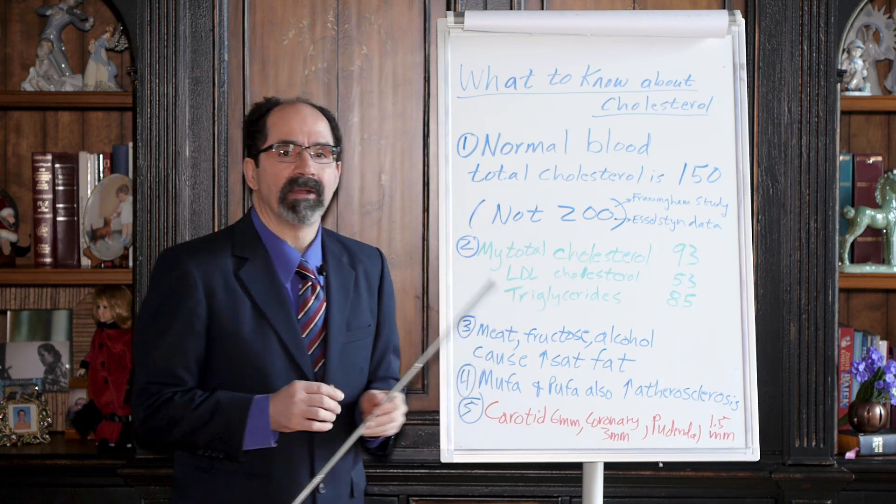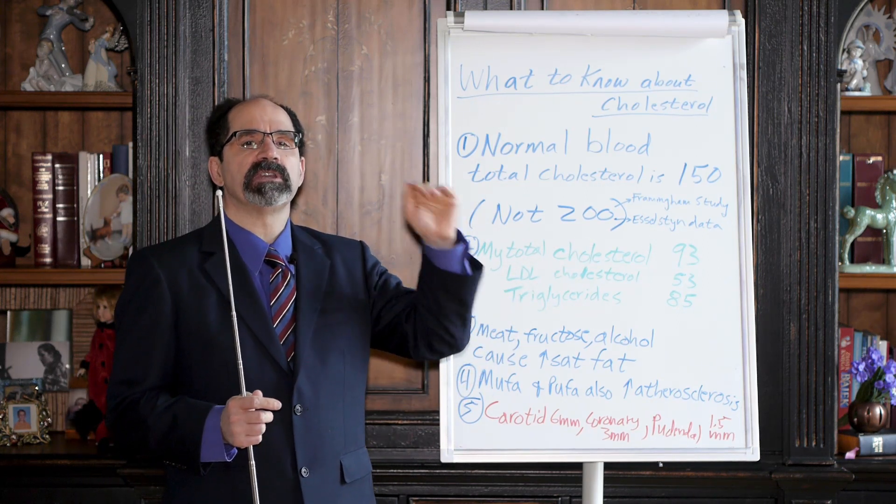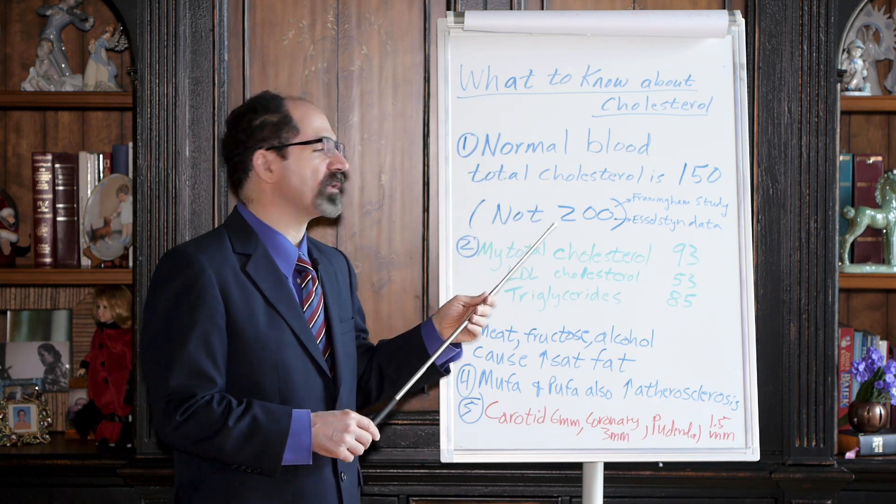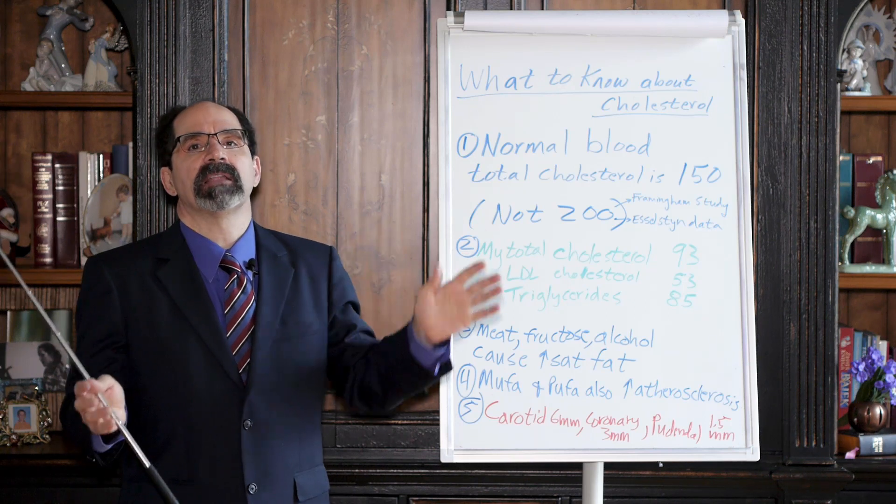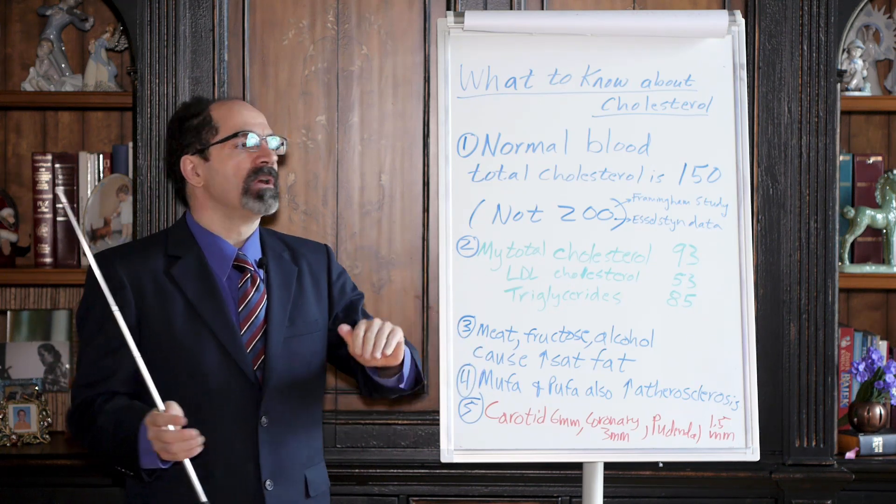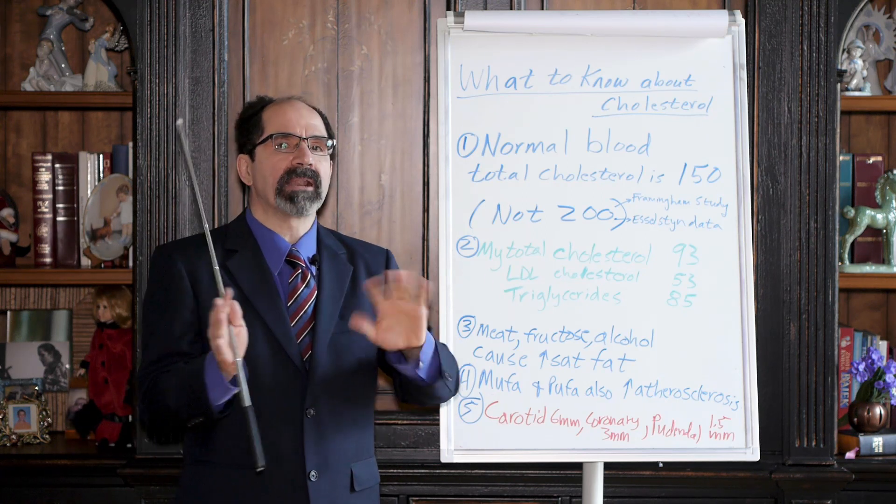Why do I say not 200? Because if you look at most medical charts, you'll see it listed as 200 being normal blood cholesterol. That's normalized based on a fat, high-cholesterol population of meat eaters who are most likely going to die from atherosclerosis. You don't want to be in that group.